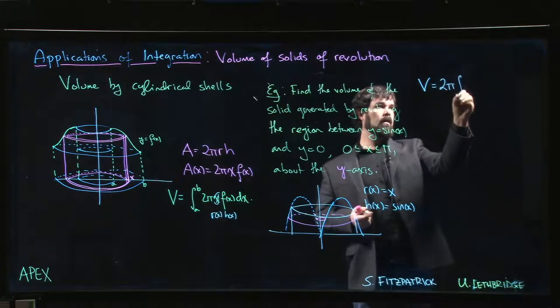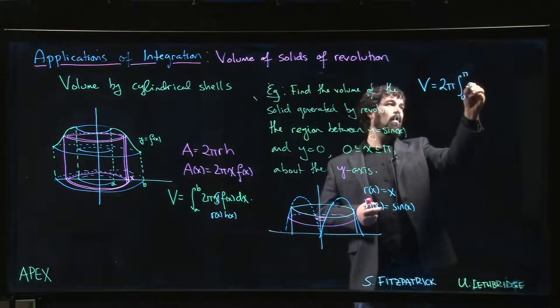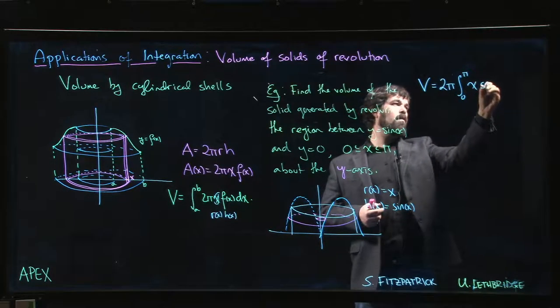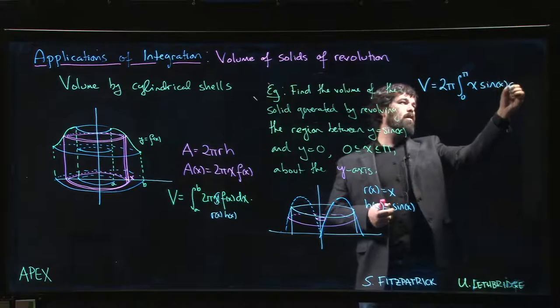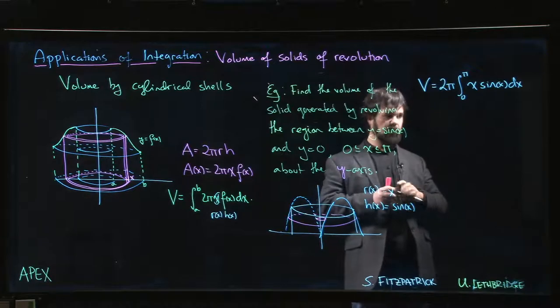So we have our 2 pi. X goes from 0 to pi, r of x, h of x, dx. And yes, you do still have to integrate by parts, but that's good practice for us.